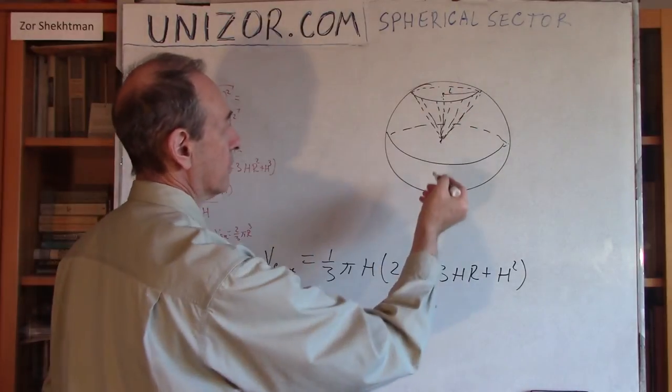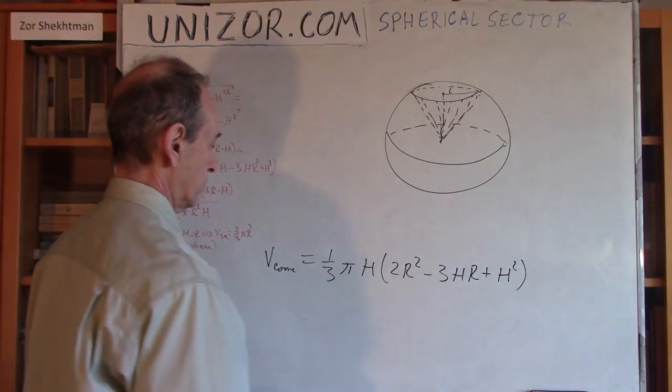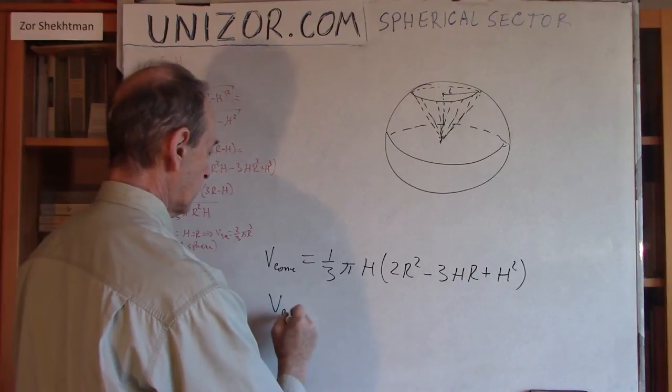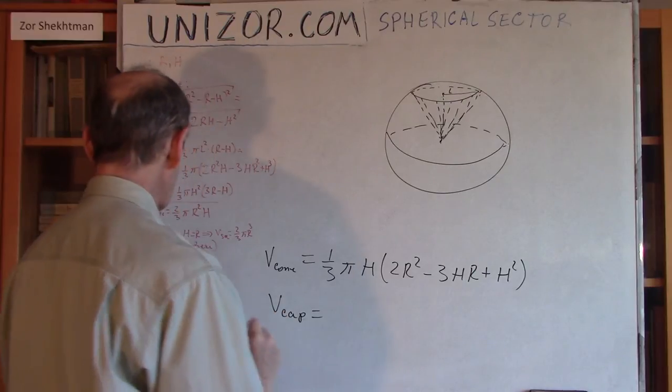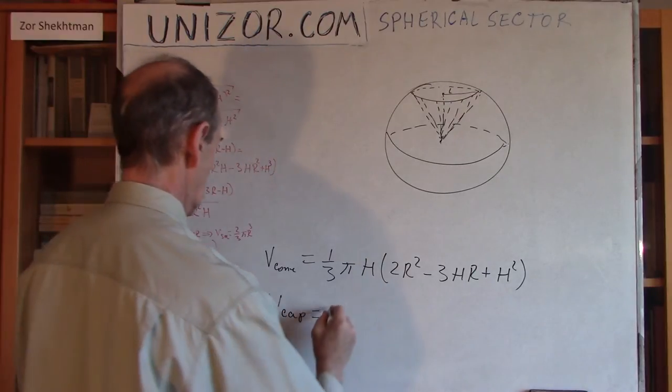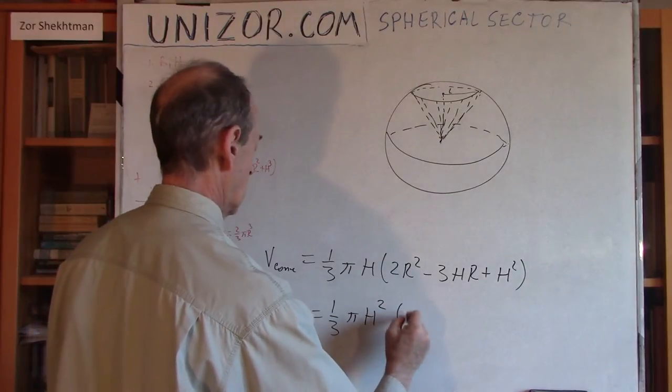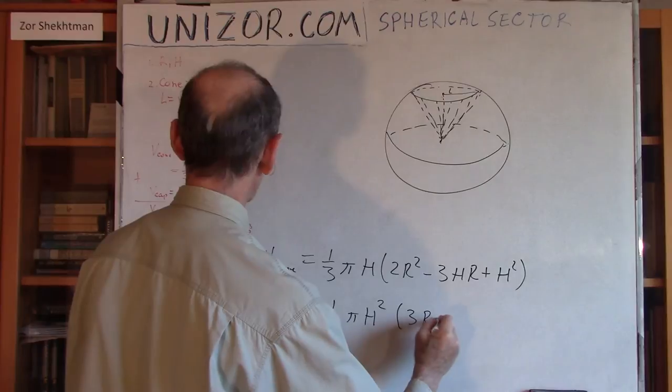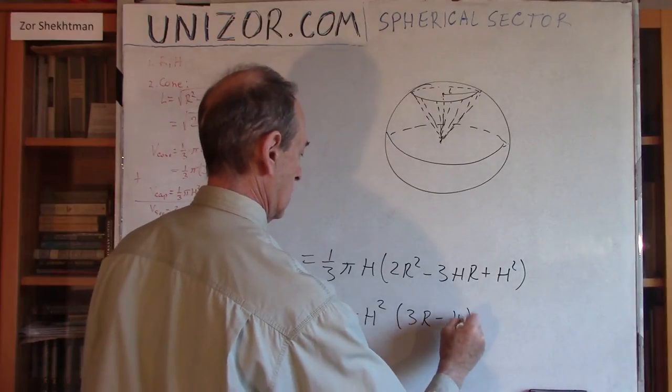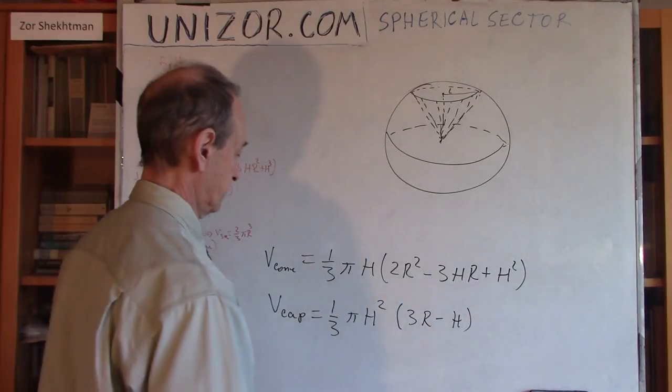And that would be equal to one-third π H, 2R square minus 2HR minus 2HR plus H square, right? And that would be equal to one-third π H, 2R square minus 3HR plus H square. That's my formula for the volume of the cone. Now, if I want the volume of the sector, I have to add the cap, right? Now, the volume of the cap from the previous lecture was one-third π H square, 3R minus H.